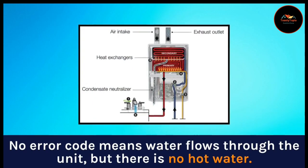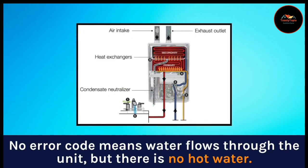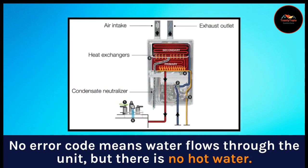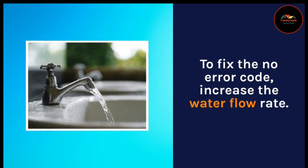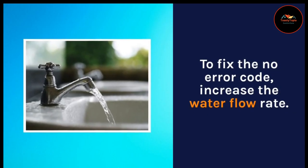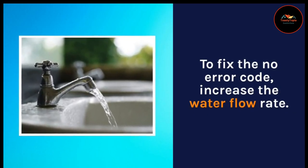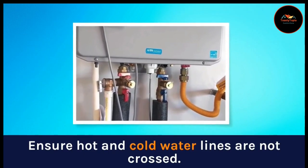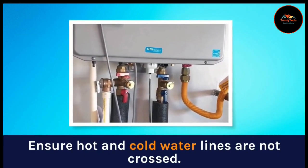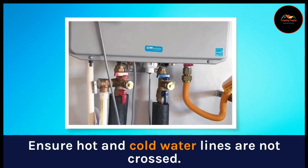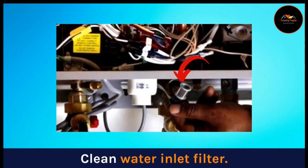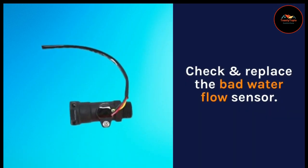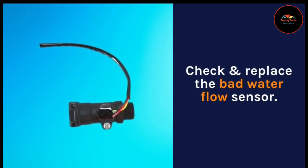No error code means water flows through the unit but there is no hot water. To fix the no error code: increase the water flow rate, ensure hot and cold water lines are not crossed, clean the water inlet filter, and check and replace the bad water flow sensor.